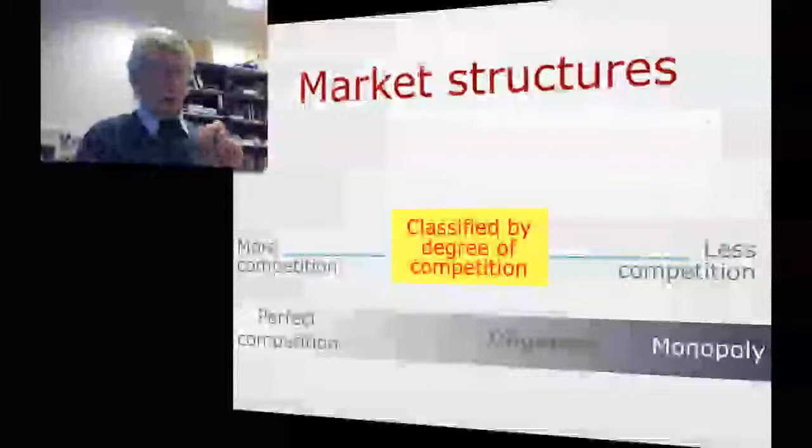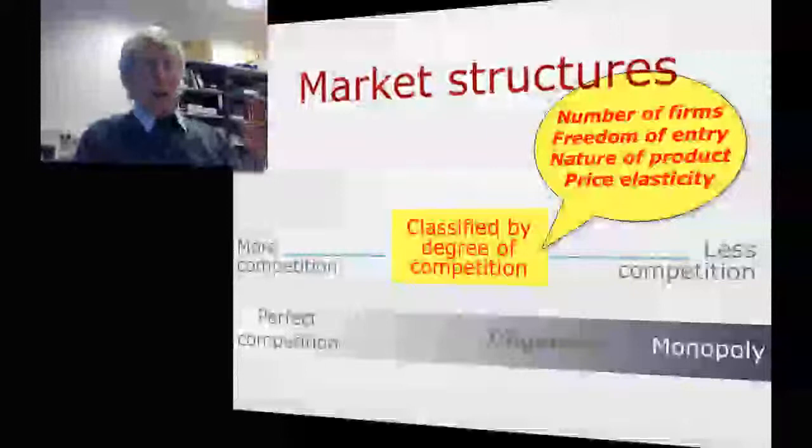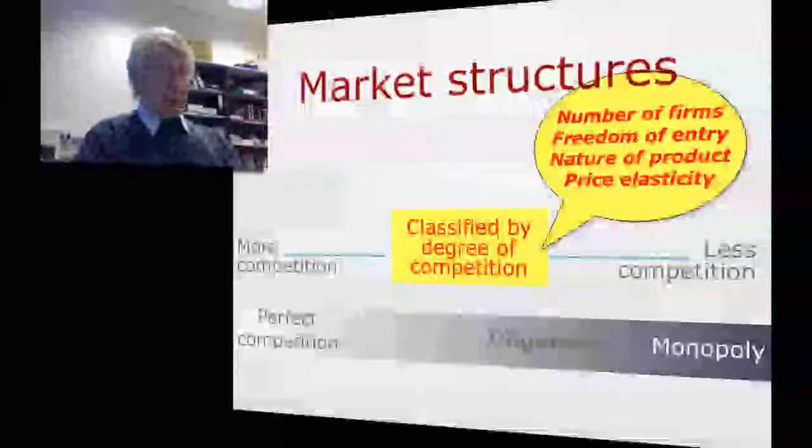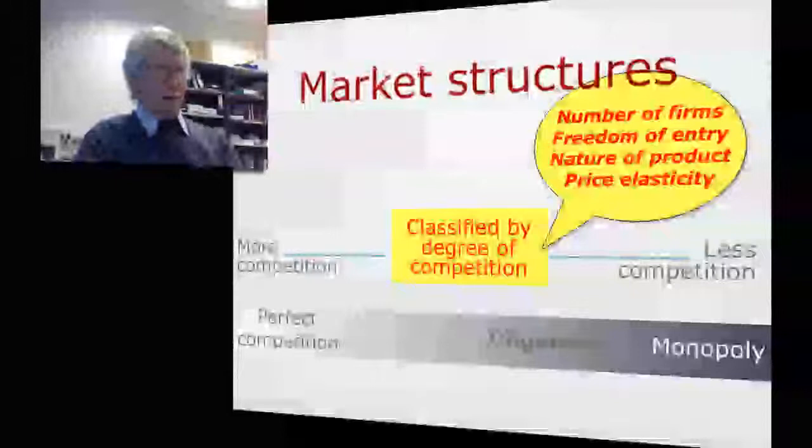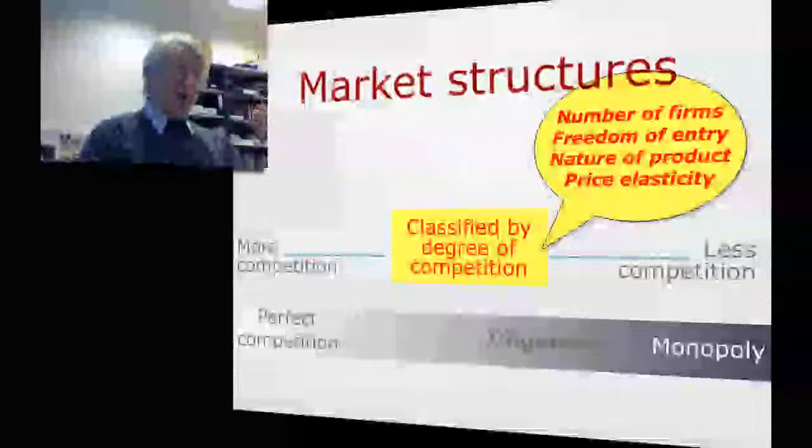So the classification depends on the degree of competition. And basically the degree of competition depends on the number of firms. Primarily it's the number of firms, the freedom of entry, how easy it is for other firms to get into the market, the nature of the product, whether there's something intrinsic in the product that makes it difficult for other firms to copy, and the price elasticity of demand. Those four things really define the market structure.